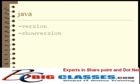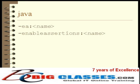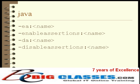These two options print a list of available options. This enables assertions for the named package or class. If a package name is appended with three dots, it also enables assertions for all of its sub-packages. Assertions are disabled by default.